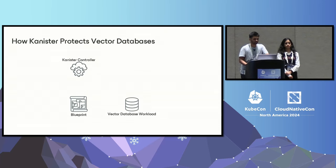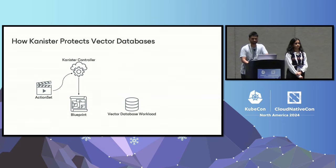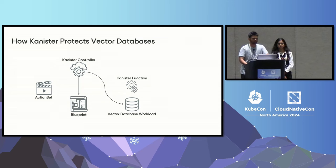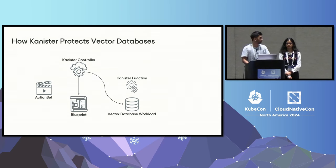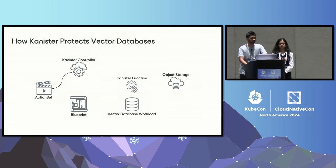Here's how Canister works: assume a vector database workload exists on your cluster. You deploy the Canister controller and a blueprint authored to protect that vector database — say PG vector. You create an action set, which tells the controller to look at the blueprint and execute the specified action. The controller executes a canister function — essentially a script running in a pod — that talks to the vector database workload, takes a dump, and uses the CanDo tool to push it to an object store pointed to by the profile. Once complete, the controller updates the action set with the operation status.